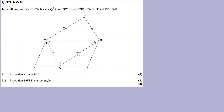Now question 8. I think you can see the two shapes. One shape has vertices P, T, S, W and the other shape has vertices P, Q, R, S. So these are the two shapes. And we are told that PQRS is a parallelogram - this one.